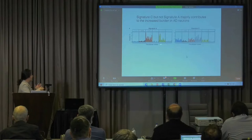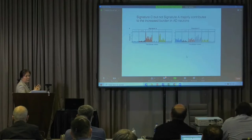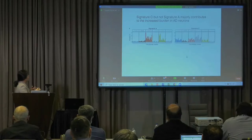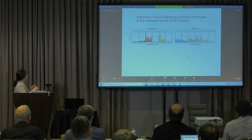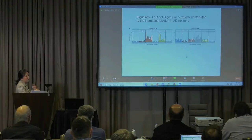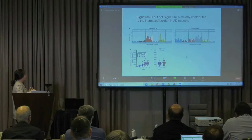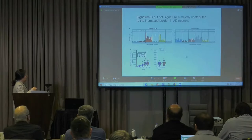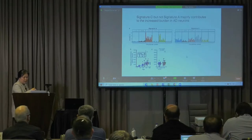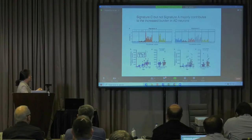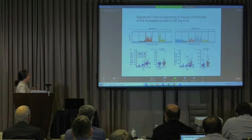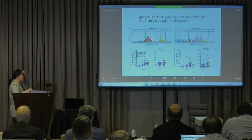By examining the mutational spectra, we can understand the biological processes underlying the mutations. Mathematical decomposition yielded two different signatures from somatic mutations in AD brains. The first, a clock-like aging signature often found in cancers, showed an age-associated increase in both AD and control neurons with no significant difference. But when we examined Signature C mutations, AD showed a much higher burden than control neurons — so the increased mutation burden in AD brains mostly comes from these Signature C mutations.